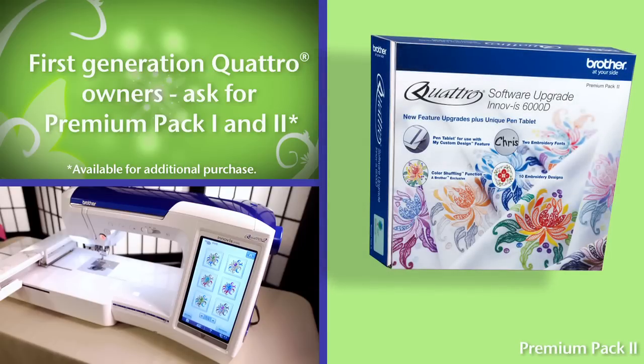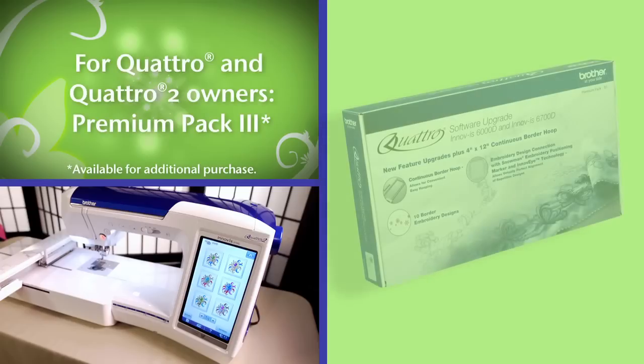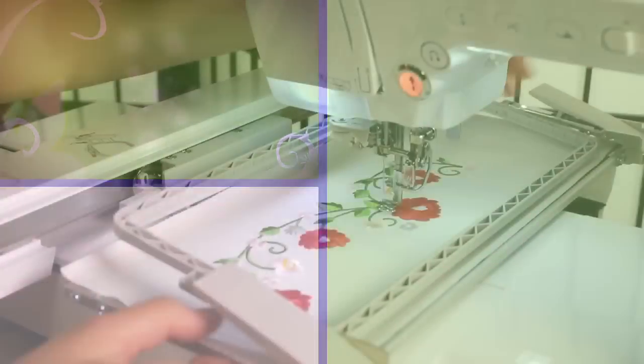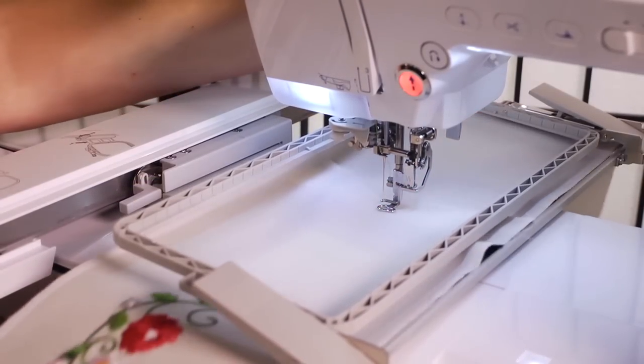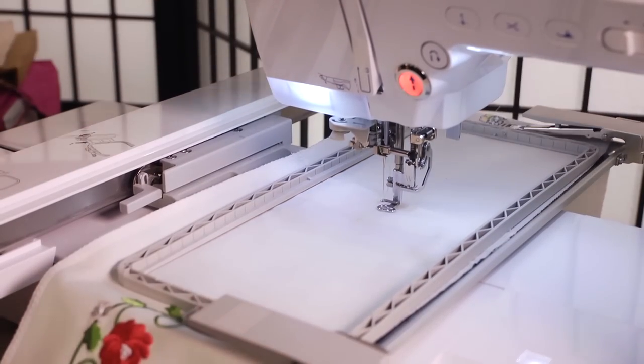Simply visit an authorized Brother Innovis dealer today and ask for Premium Packs 1 and 2. And both Quattro and Quattro 2 owners should be sure to ask for Premium Pack 3, which comes with a new 4-by-12-inch continuous border hoop and 10 new embroidery designs, and enables your machine to connect embroidery patterns more precisely.